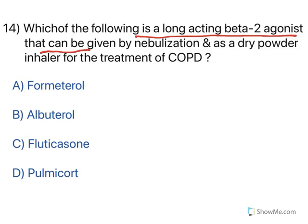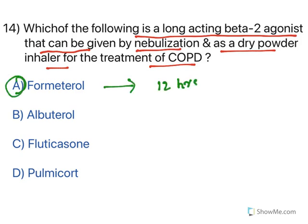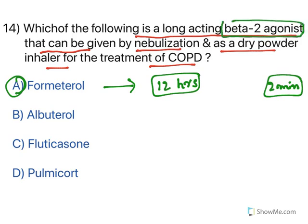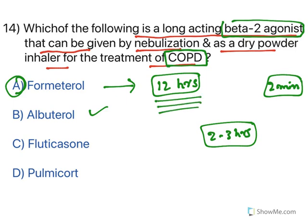Which of the following is a long-acting beta-2 agonist that can be given by nebulization as a dry powder inhaler for treatment of COPD? Formoterol acts for 12 hours and its onset of action is very rapid — within two minutes. To treat asthma or COPD, beta-2 agonists are used, but short-acting ones like albuterol last only two or three hours. To control early morning asthmatic attacks, a longer-duration beta-2 agonist like formoterol is needed.